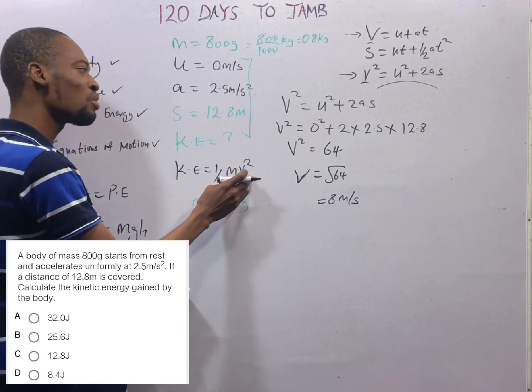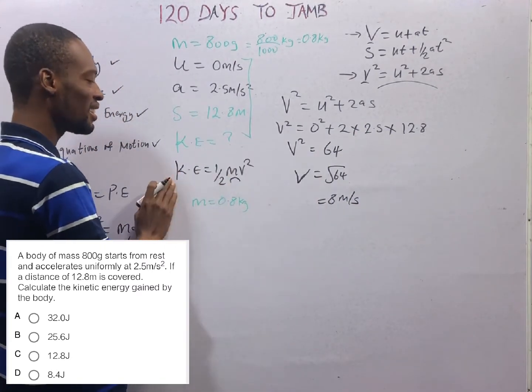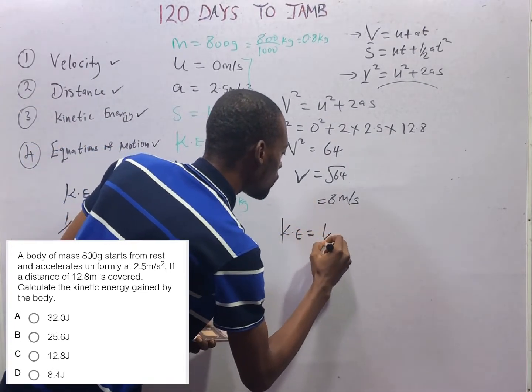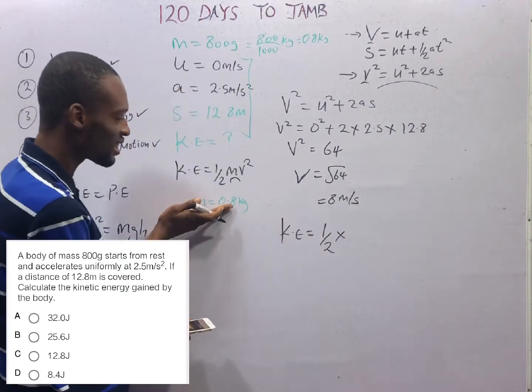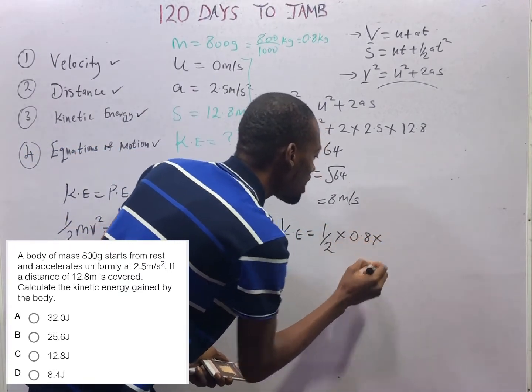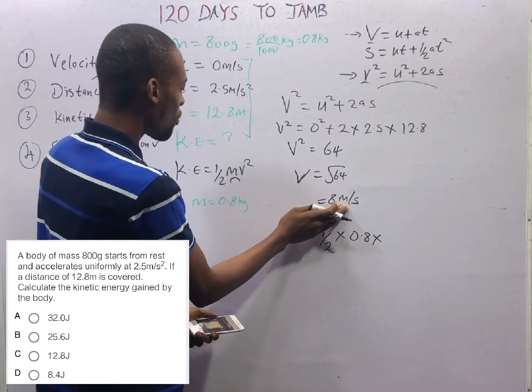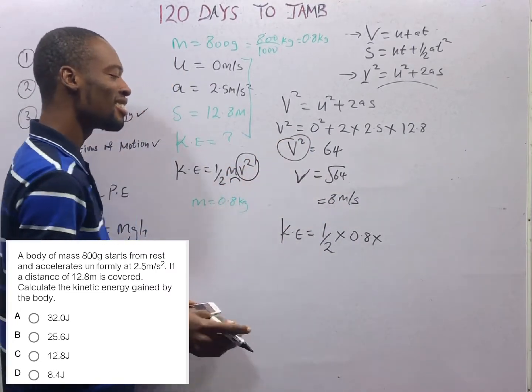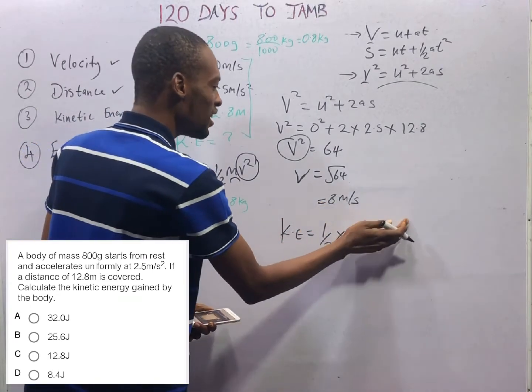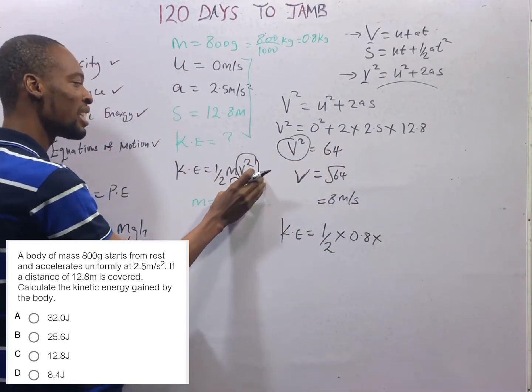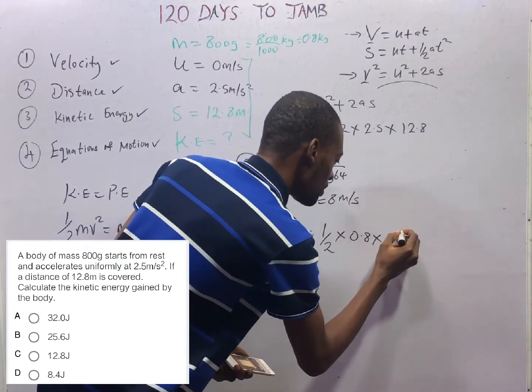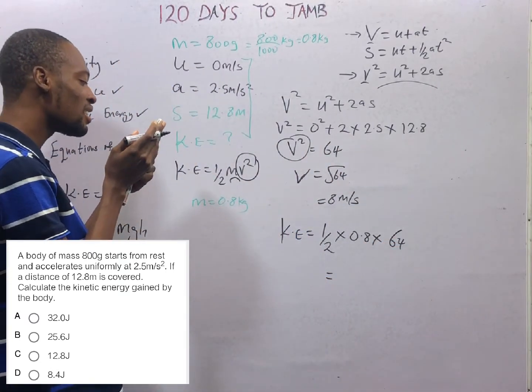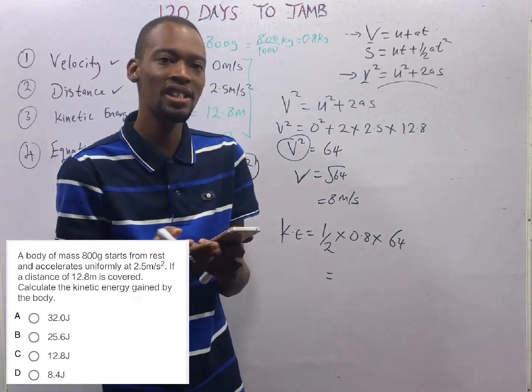Which means, we have the velocity we need to calculate kinetic energy. KE is therefore ½ × mass in kilograms, 0.8 × v is 8. But we already have v². We are using v² here. So you can either say 8 squared here, or you simply put 64. Which is the same thing as ½ × 0.8 × 64. Ladies and gentlemen, your kinetic energy is 25.6 joules, which is option B.